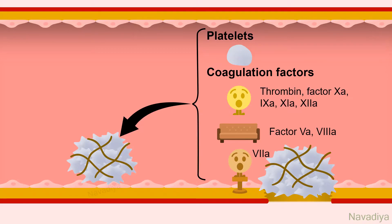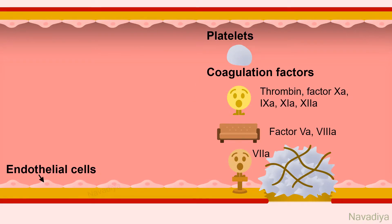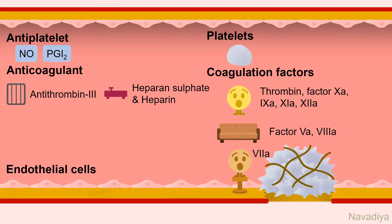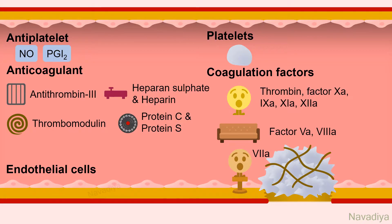To prevent this, we have endothelial cells, antiplatelet factors like nitric oxide and PGI-2, and a team of anticoagulant factors which includes antithrombin-3, heparansulfate and heparin, thrombomodulin, protein C and protein S, and tissue factor pathway inhibitor. They prevent blood clotting in normal healthy vasculature.